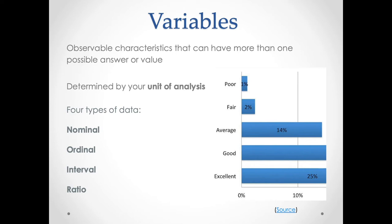Nominal variables are sometimes referred to as categorical — categories of things that can't be ranked. This is the critical thing about nominal or categorical data: they cannot be ranked. Race or ethnicity and gender are common sociological examples. There's no way to say that one gender is higher or more than another — they're just different categories. Nations are categories of things too. The United States is not 'one more than' Mexico; it's just different. Just as there's no way to say one race is higher or bigger than another, nominal data are just categories of things that cannot be ranked.